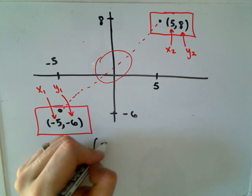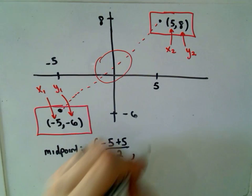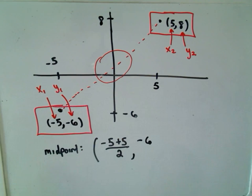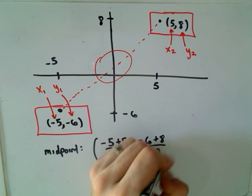So it says if we add the x coordinates, we'll get negative 5 plus 5 divided by 2. And then it says the midpoint for the y coordinates will get negative 6 plus 8, and divide that by 2.